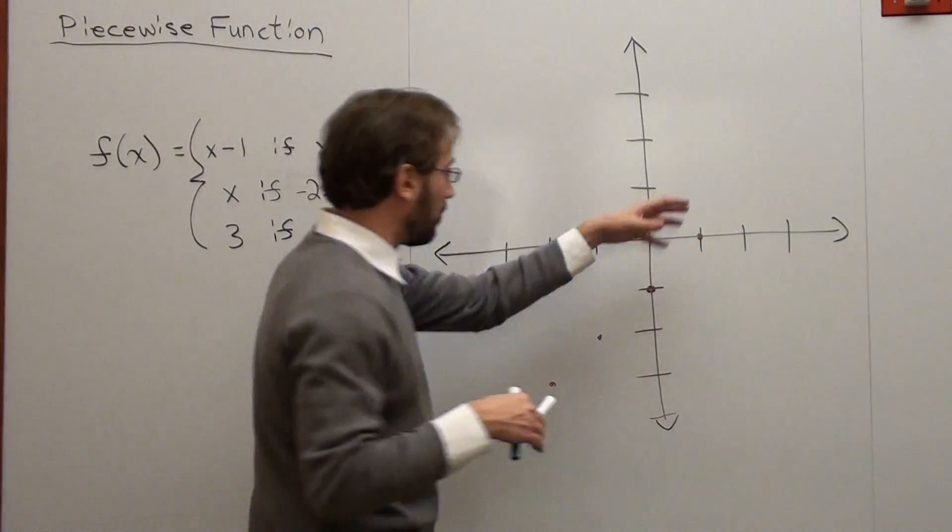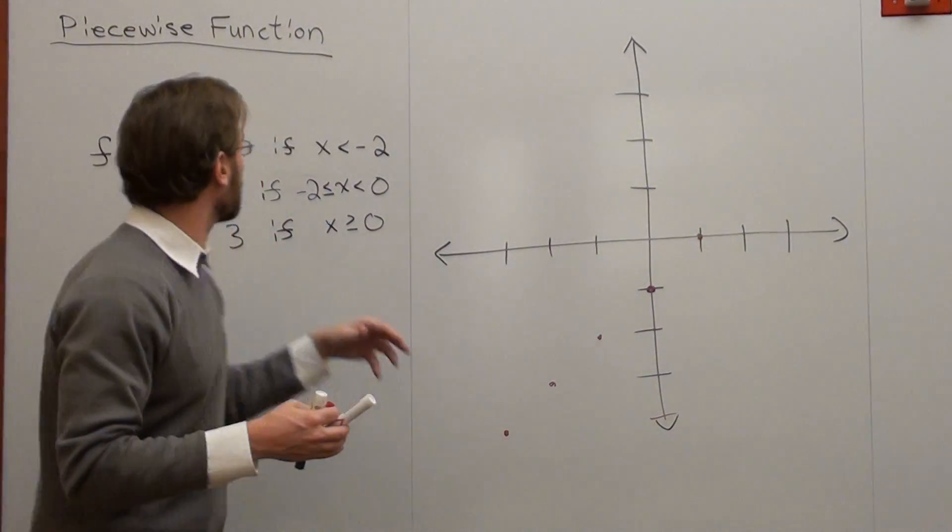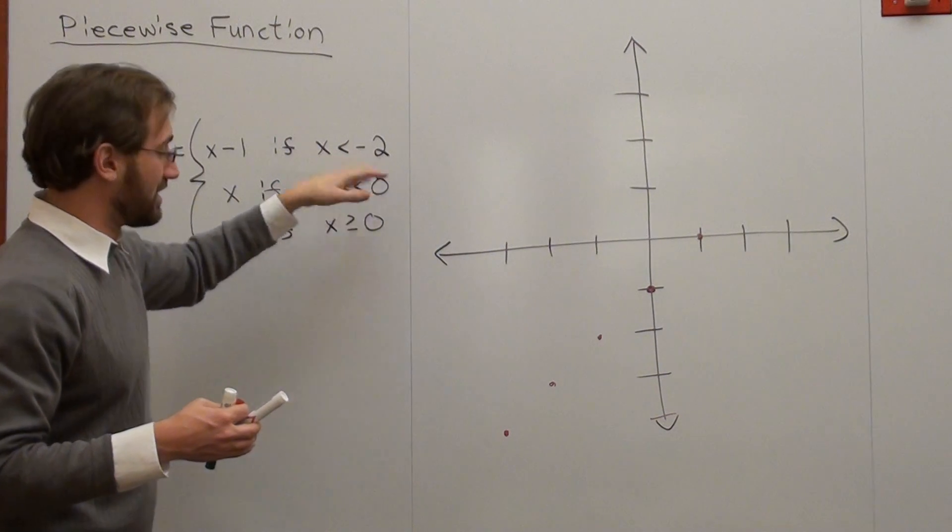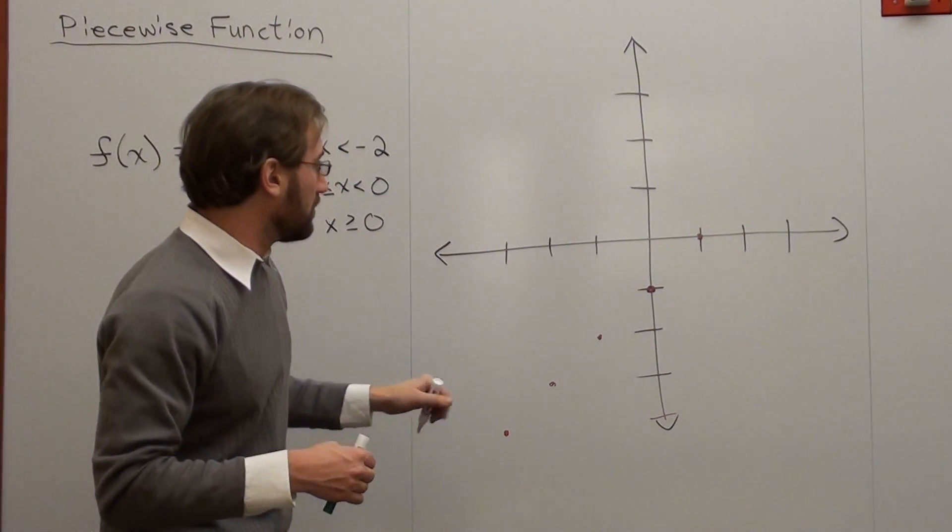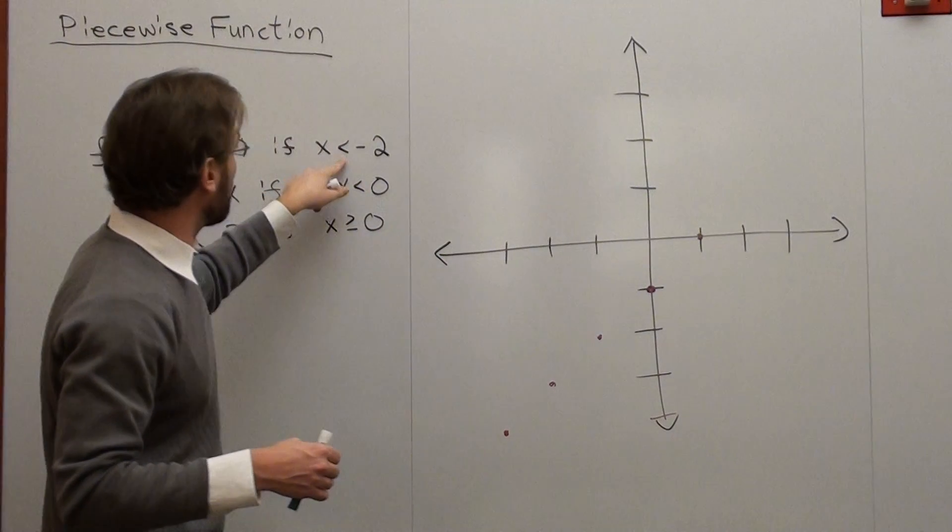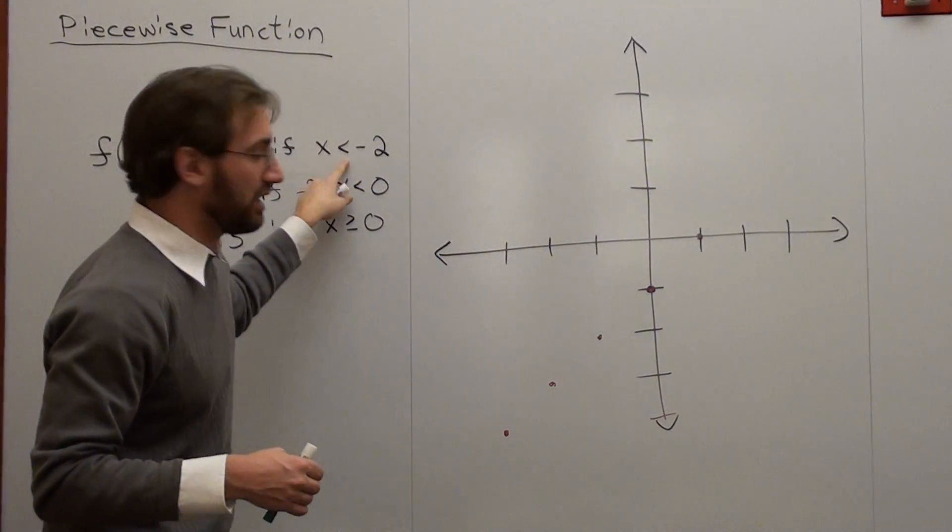Basically, this is the first graph that we're working with. But we can't use it for the whole domain. We can't use it for all the x values. We can only use it if x is less than negative 2. So here's my x is less than negative 2.